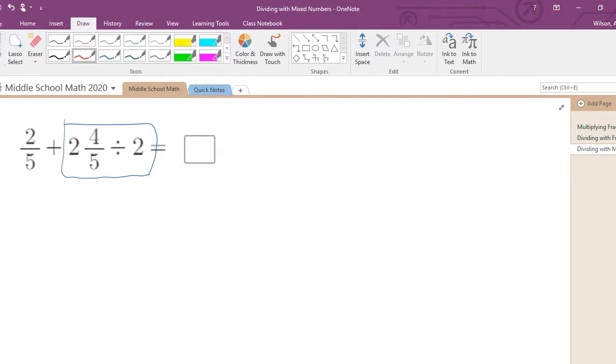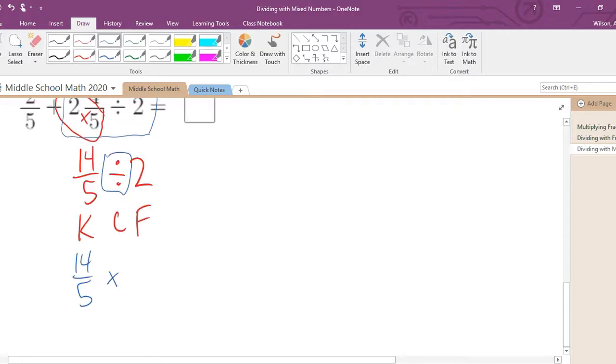We have to simplify or evaluate two and four fifths divided by two. Remember, it's easier to turn our mixed numbers into improper fractions. We take the whole number, multiply by the denominator. Two times five is ten. And then we add our numerator, which is four. That's fourteen. So now we have fourteen over five divided by two. This is the part of the expression that we have to simplify first.